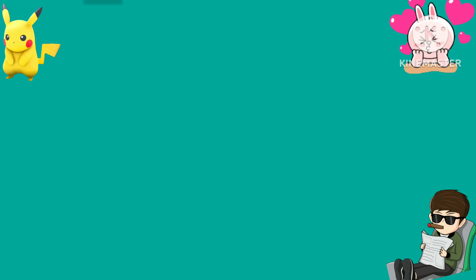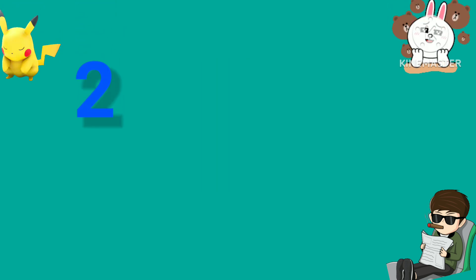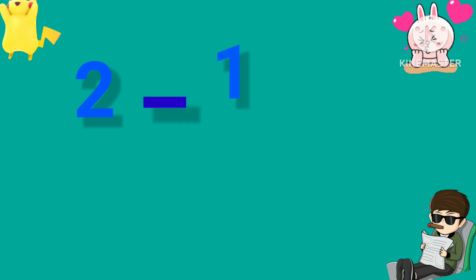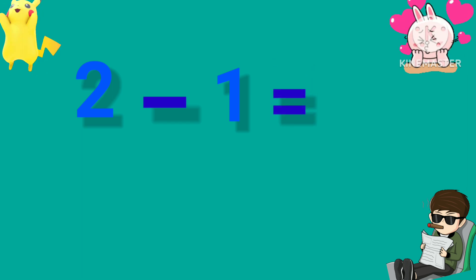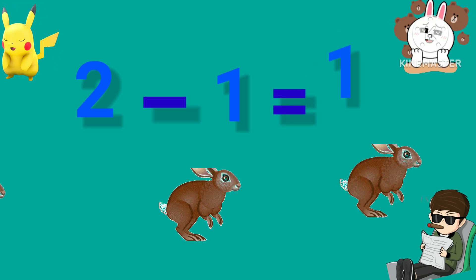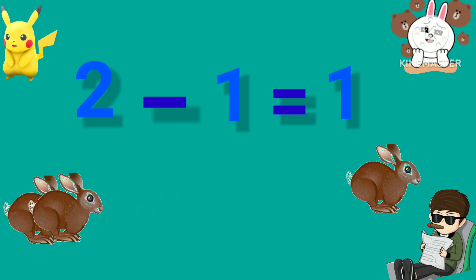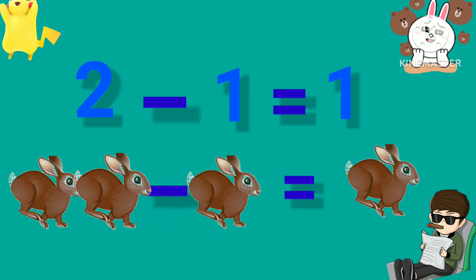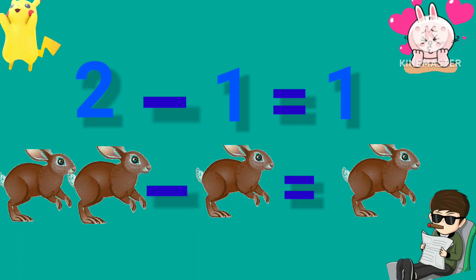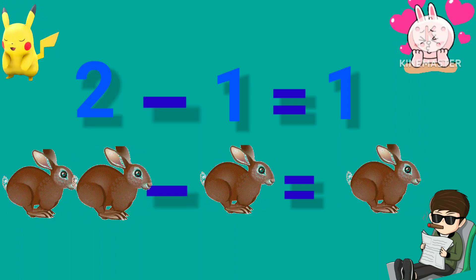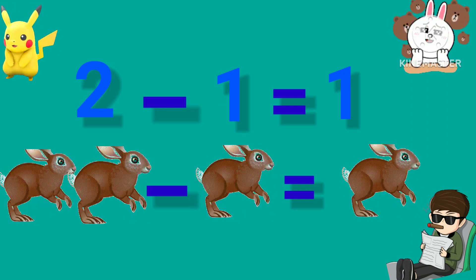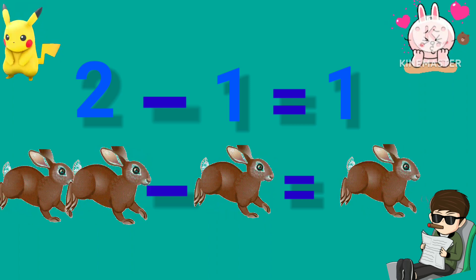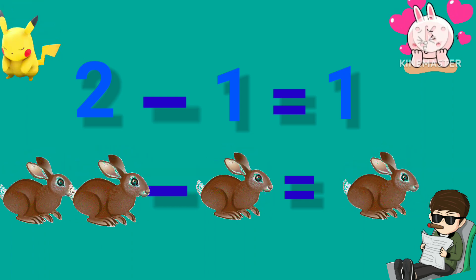2 minus 1 is equal to 1. We have 2 rabbits minus 1 rabbit, which is equal to 1 rabbit. So 2 minus 1 equals 1.